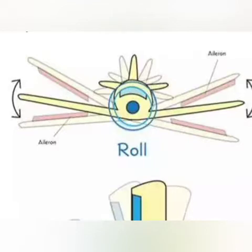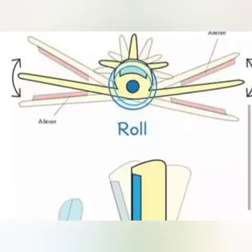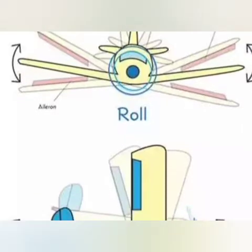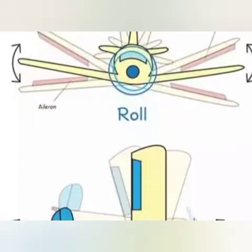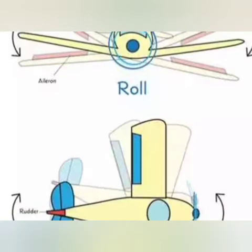The wings are moving, rolling left and right, up and down. The aileron controls this. The aileron moves upwards on the left wing and downwards on the right wing, which creates right roll.